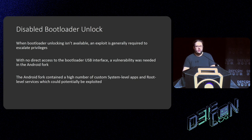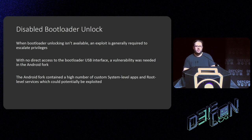When bootloader unlocking isn't available, you're going to need some kind of exploit to escalate privilege to root. With no direct access to the bootloader USB interface — my standard approach for attacking a device like this — a vulnerability was needed in the Android fork itself. I didn't think I'd find much in Android proper, but thought the OEM's changes would be where I'd find the most critical vulnerabilities. What I found was the Android fork contained a high number of custom system and root-level applications which could be potentially exploited.